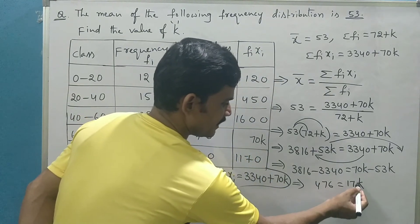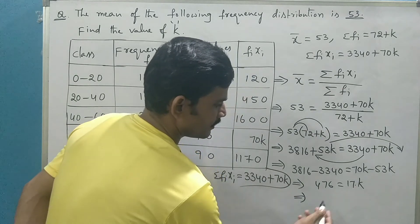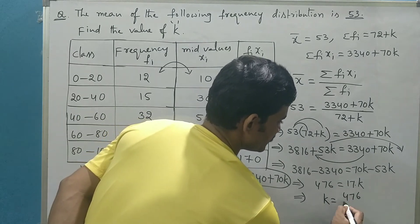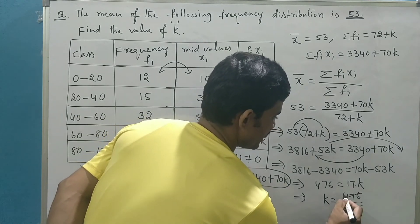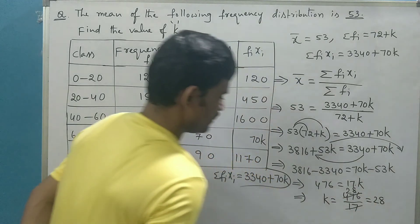17 is multiplying. It will divide when you transpose into LHS. And K value becomes 476 over 17. If you cancel, it would be arrived as 28.